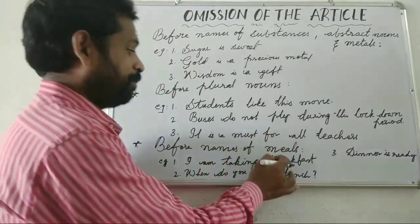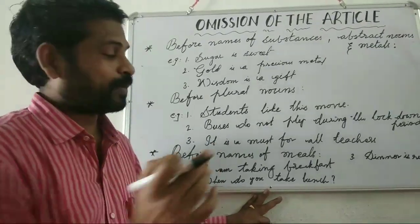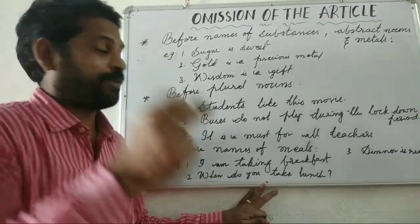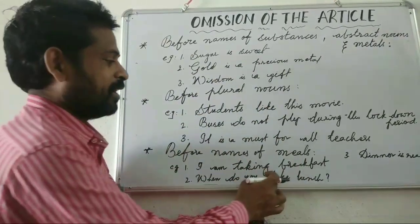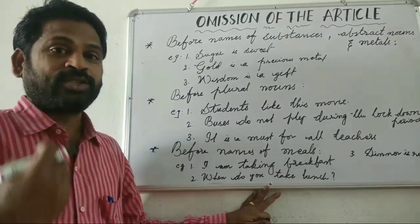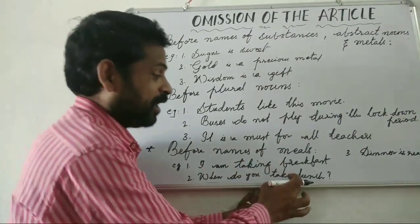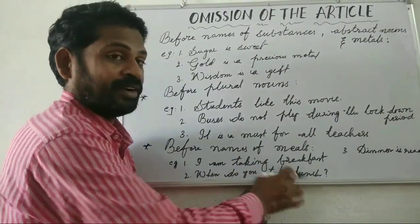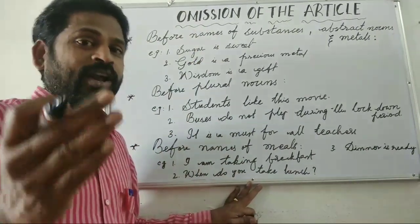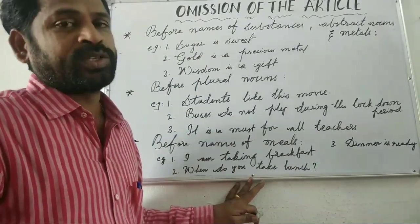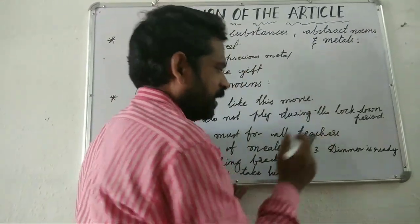'The breakfast which I had yesterday was tasty' — I am speaking about yesterday's breakfast specifically, so I use 'the'. 'The lunch which I took in your house was delicious.' 'The dinner which I took in your house was good.' So if you want to particularly say about a specific meal, then you can use the definite article.